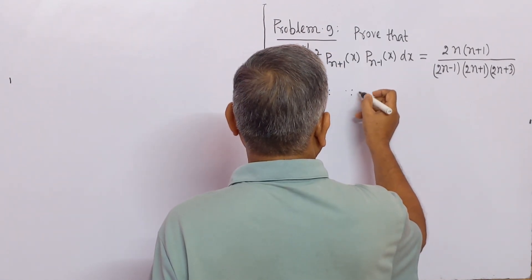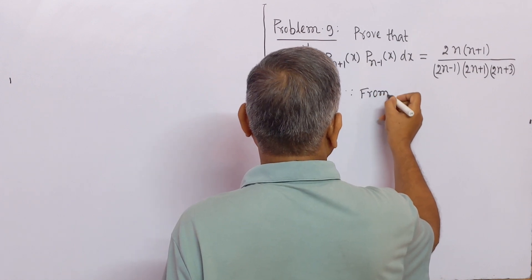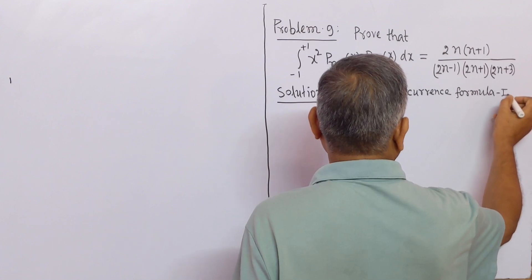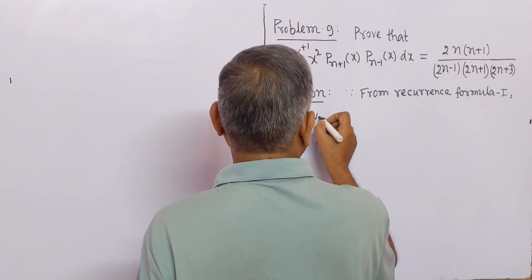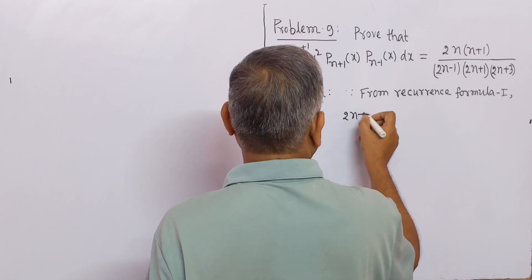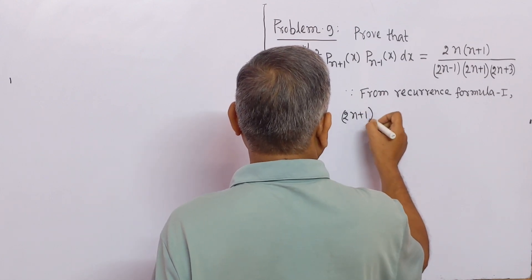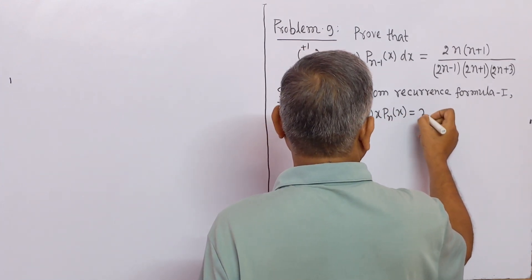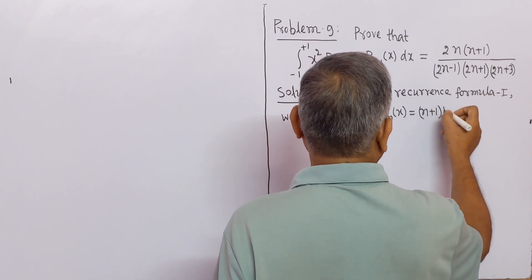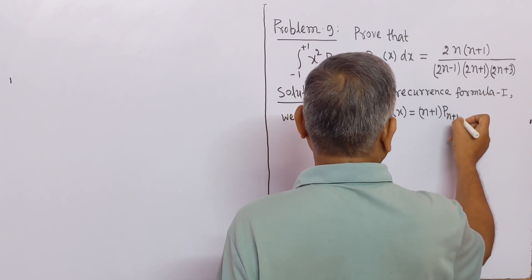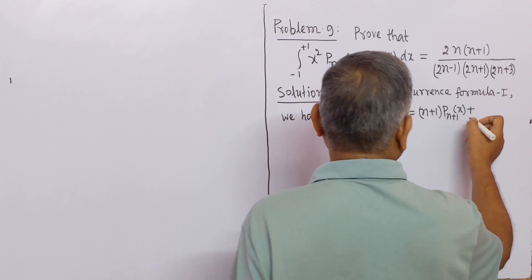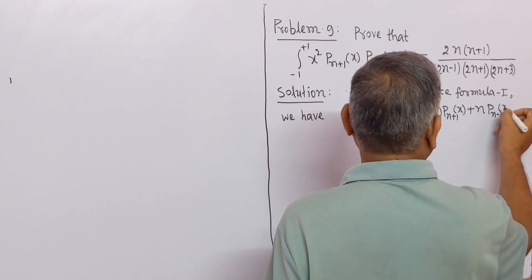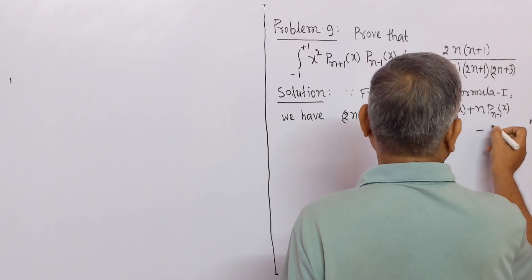Since from recurrence formula 1, we have: (2n+1) x P_n(x) = (n+1) P_(n+1)(x) + n P_(n-1)(x). This is equation number 1.